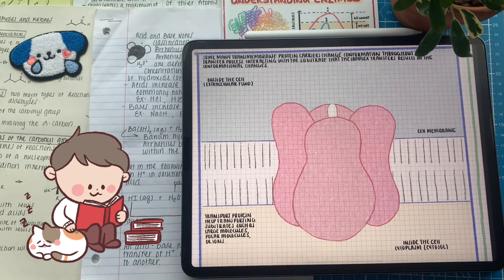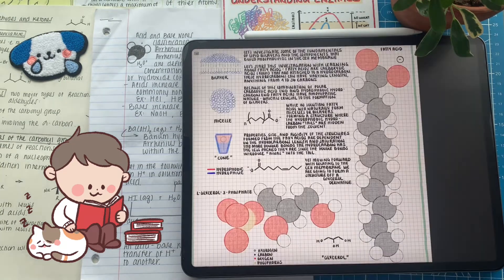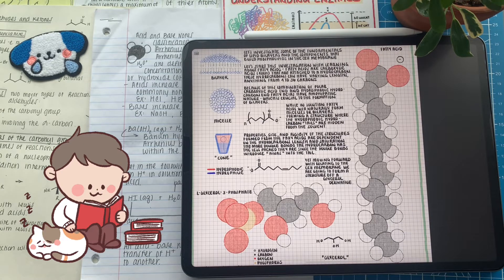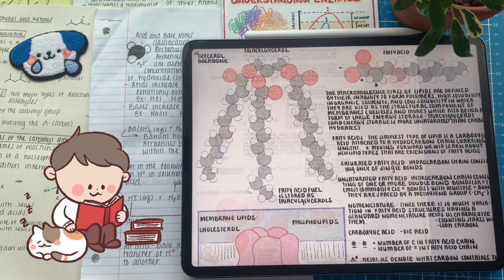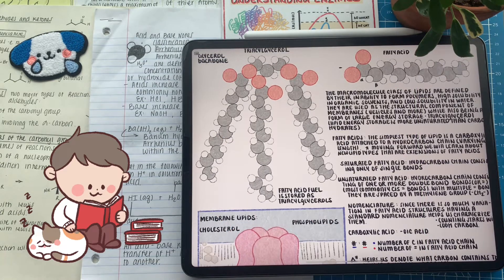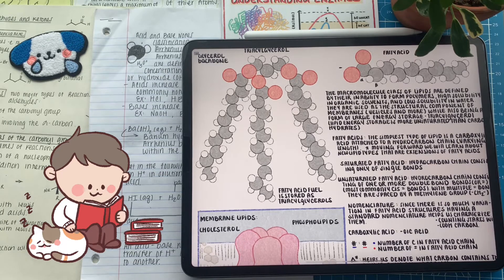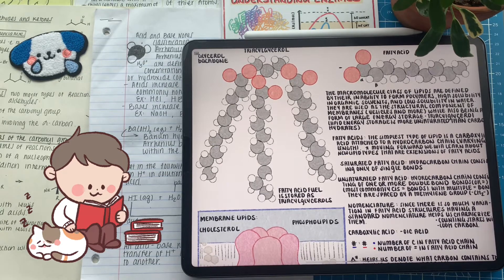In order to gain a grasp on how lipids play a part in all these functions, we have to talk about the most simplest lipid, the fatty acid. When we look at a fatty acid, there's two main components: the carboxylic acid and then there's the long aliphatic carbon chain. Aliphatic just meaning that there's no cyclic structures and that the carbons just form an open chain.